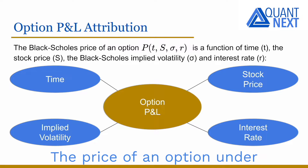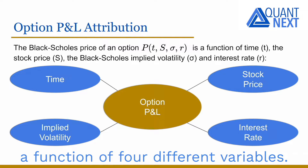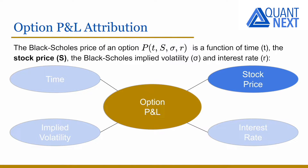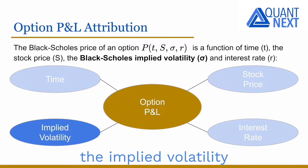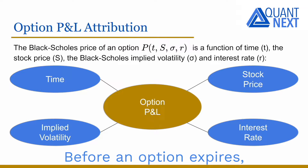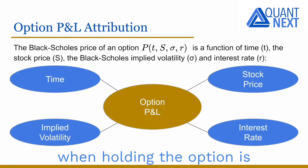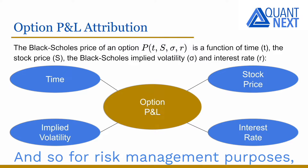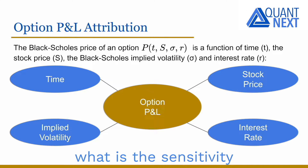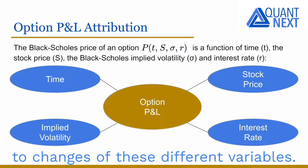The price of an option under the Black-Scholes model is a function of four different variables: time, the stock price, the implied volatility, and interest rates. Before an option expires, its price and the P&L when holding the option is a function of their dynamics. And so for risk management purposes, it is key to know what is the sensitivity of the option position to changes of these different variables.